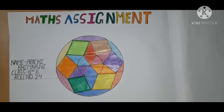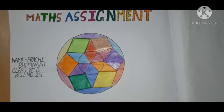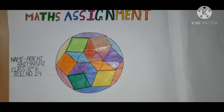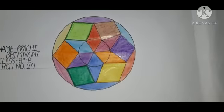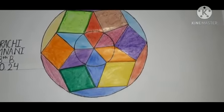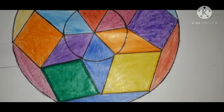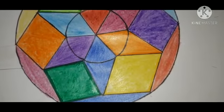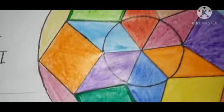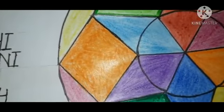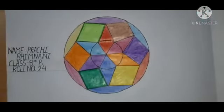Good morning, respected teachers and dear friends. This is Prachi Bhim Nani, roll number 24 of class 8B, with my assignment work. This rangoli is made up of different types of quadrilaterals like a kite and rhombus. A kite is a quadrilateral in which two pairs of adjacent sides are equal. A rhombus is a parallelogram in which all sides are equal. Thank you.